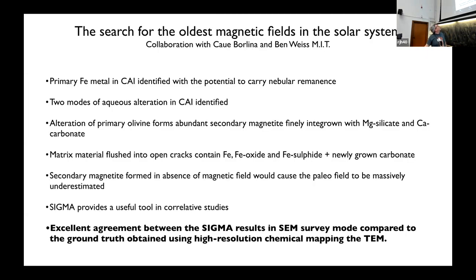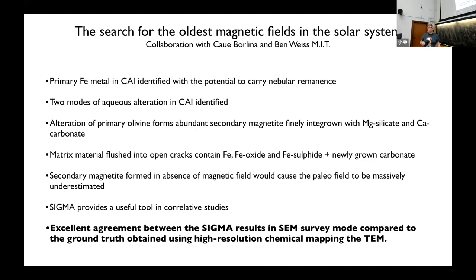So, to the conclusions: hopefully I've introduced this new SIGMA tool that we can use as part of our workflow for characterizing the phases we're interested in. It's particularly good at hunting down iron oxide within complex mineralogy, and I think it's going to be enormously useful for the sort of work that we've been hearing about this morning.